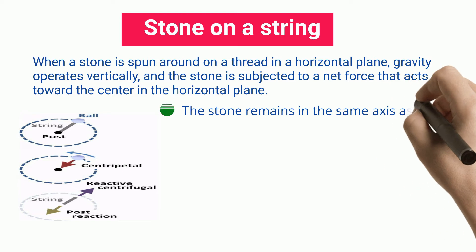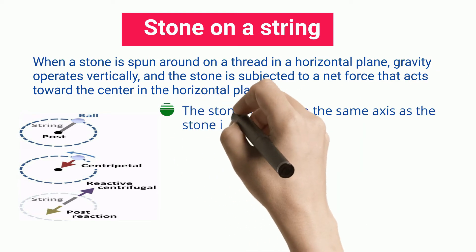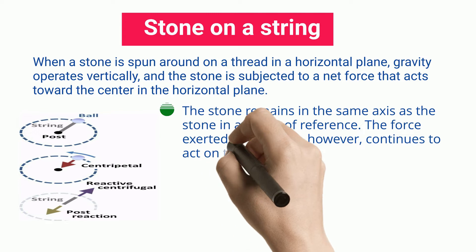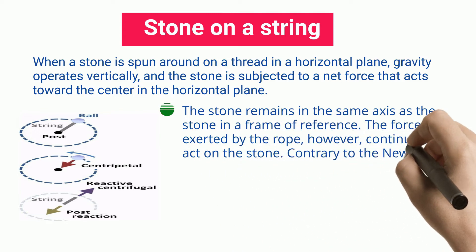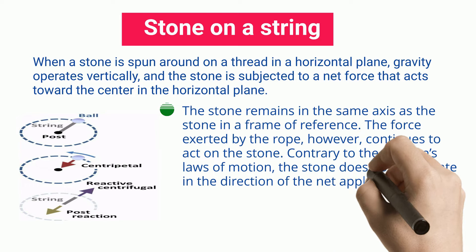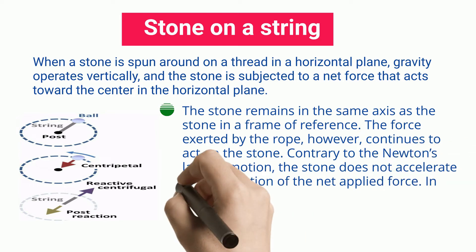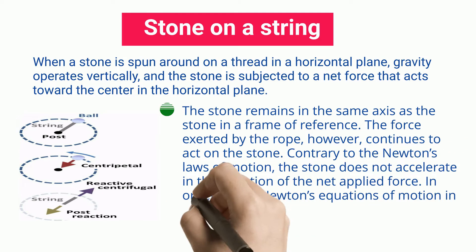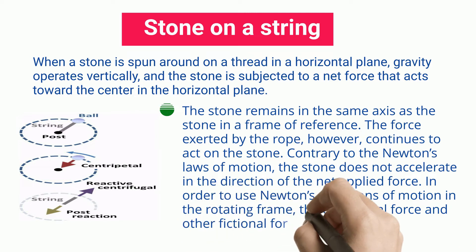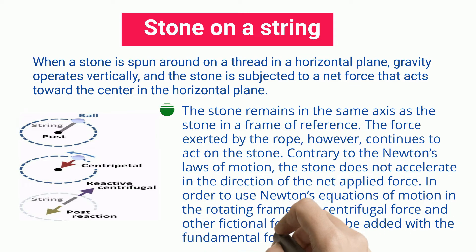The stone remains in the same axis as the stone in a frame of reference, and the force exerted by the rope continues to act on the stone. Contrary to Newton's laws of motion, the stone does not accelerate in the direction of the net applied force. In order to use Newton's equations of motion in the rotating frame, the centrifugal force and other fictitious forces must be added with the fundamental forces.